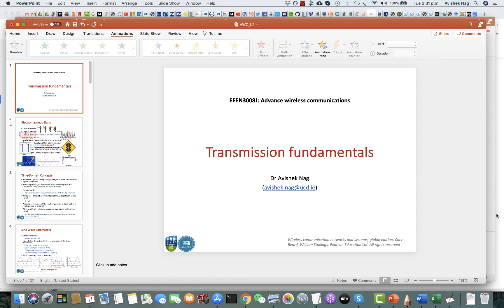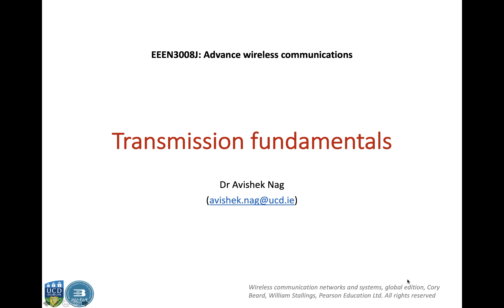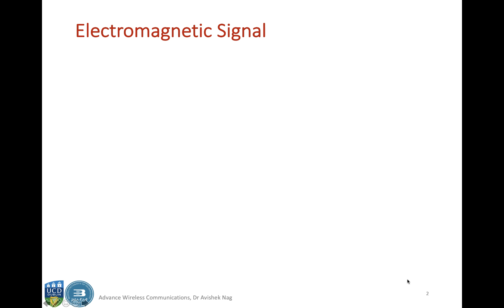Welcome students to the next video lecture for wireless communications. Today we will cover different transmission fundamentals for a wireless communication system. Any wireless signal transmitted from a source like an antenna to a receiver like your mobile phone or Wi-Fi access point is electromagnetic in nature. The signal has varying electric and magnetic fields that carry the information in that signal.